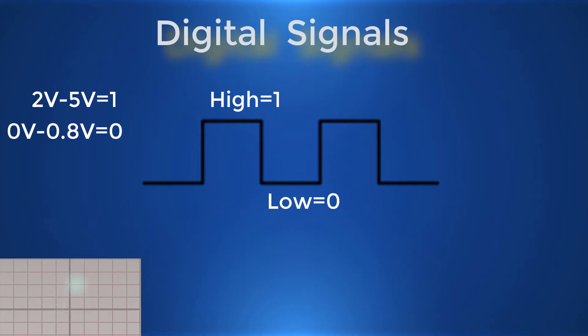Because the position of signals in a digital system is either high or low, meaning one or zero, that's why digital signals are also called binary signals.